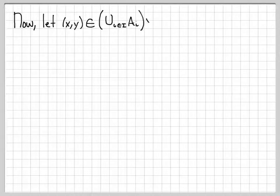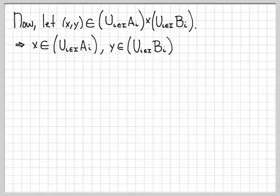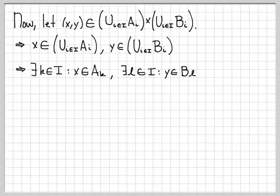For the second half of the proof, we go the other way. Let x comma y be an arbitrary element of union a cross union b. By definition of the Cartesian product, x has to be an element of union a and y has to be in union b. If x is an element of this union, it has to be in at least one of these a sets — I'll call that set a sub k, so there exists some k in the index set I such that x is in a sub k. Similarly, there has to be at least one b sub i that y is in — I'll call that set b sub L, so there exists an index L in I such that y is in b sub L.